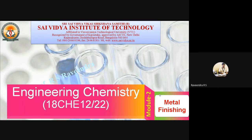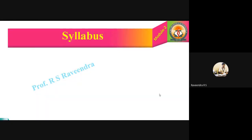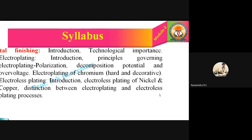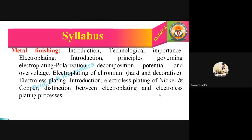Under this headline, we are going to cover the Metal Finishing introduction and technological importance, then the principles governing the electroplating — like polarization, decomposition potential, and overvoltage. Then we have three examples: electroplating of chromium, then electroless plating introduction, electroless plating of nickel and copper, and the distinction between the electroplating and electroless plating processes. This is the syllabus of Module 2, second subunit, Metal Finishing.